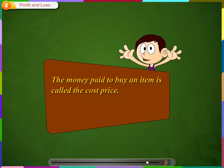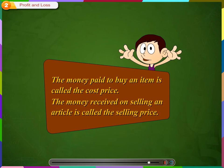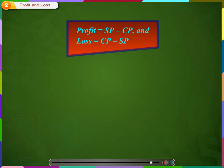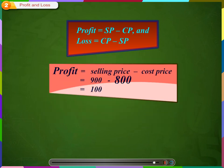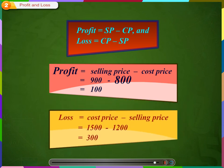Remember, the money paid to buy an item is called the cost price. The money received on selling an article is called the selling price. If SP is greater than CP, it is a profit; profit equals SP minus CP. If CP is greater than SP, it is a loss; loss equals CP minus SP. There is a trick to remember these formulae: first, by looking at the CP and SP, find out if it is a profit or loss, and then subtract the lower number from the higher number.